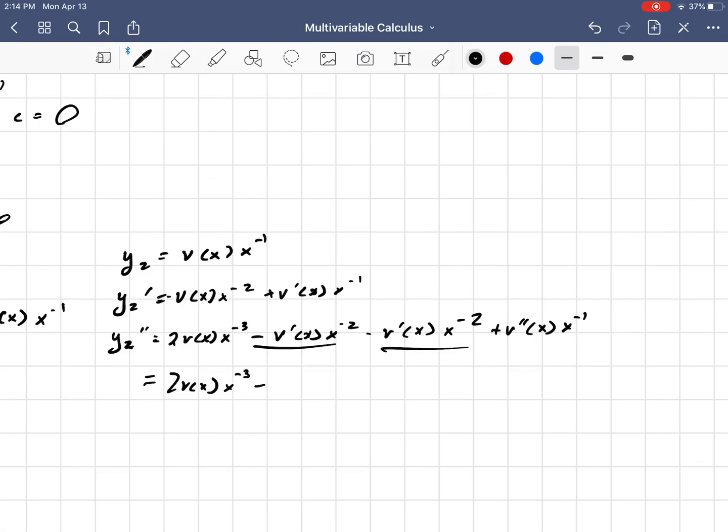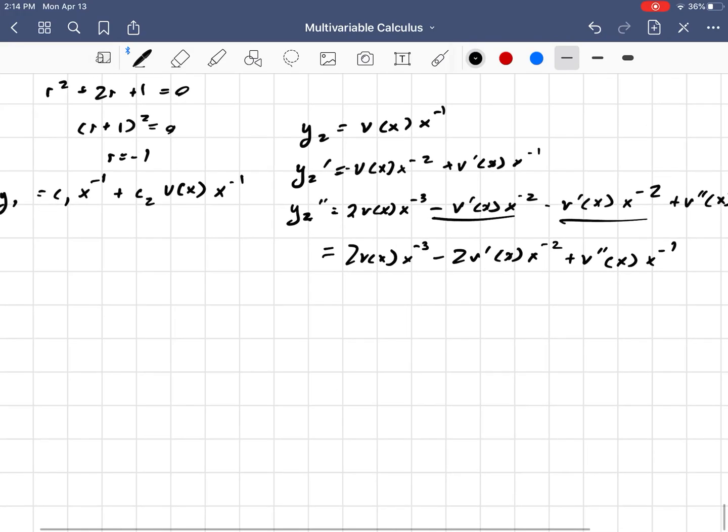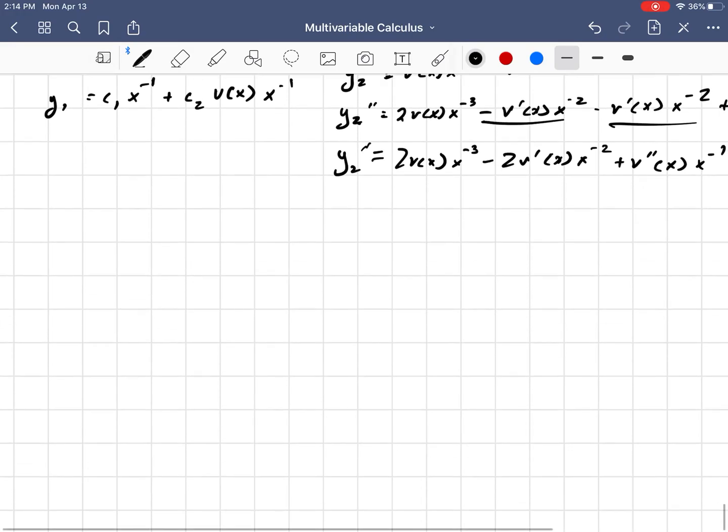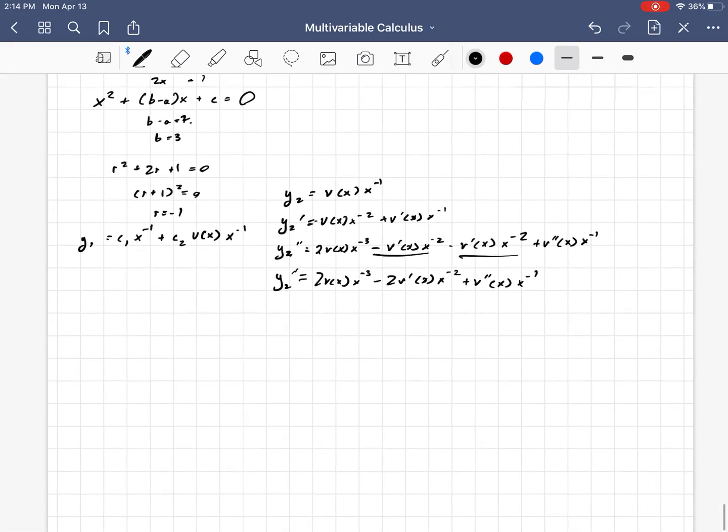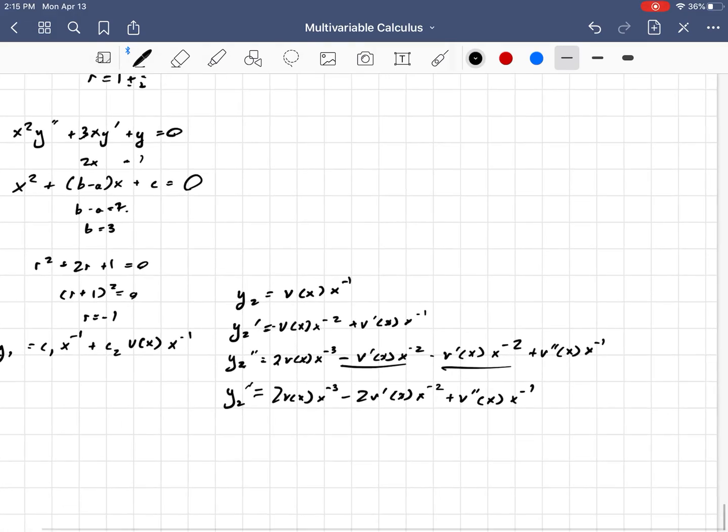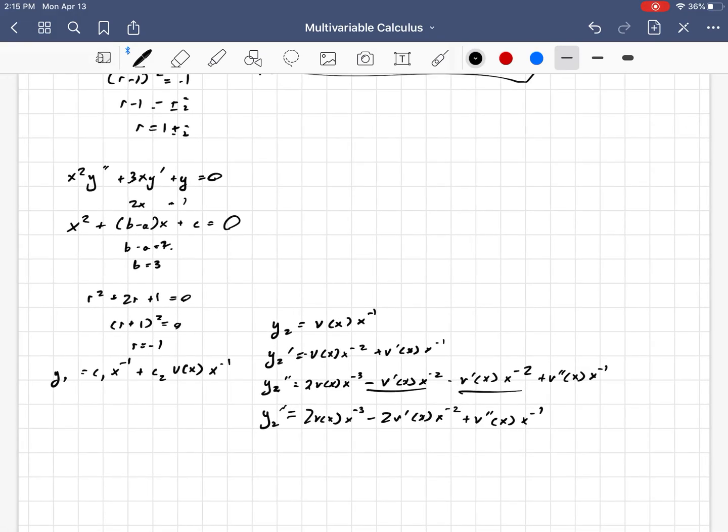Can we combine anything? This is minus, minus, they're the same thing. So 2v(x)x⁻³ - 2v'(x)x⁻² + v''(x)x⁻¹ is y₂ double prime.